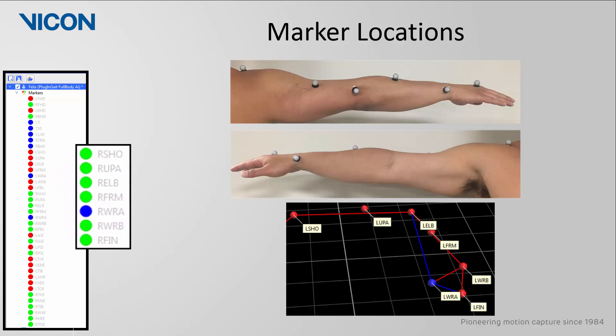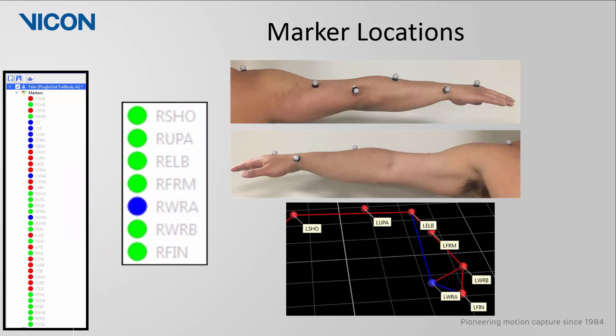The next set of markers is for the right arm. This has the same landmarks as the left arm. However, for the right upper arm and right forearm markers, they should be placed slightly proximal to the midpoint between each segment to introduce asymmetry in marker placement which will allow the labeling algorithm to more easily distinguish between the left arm from the right.